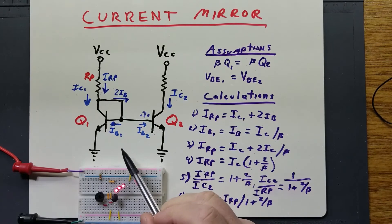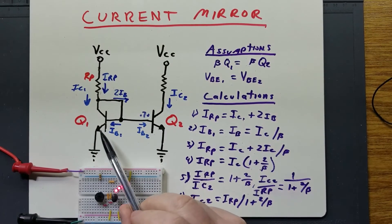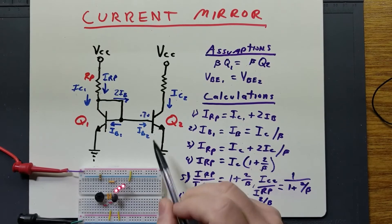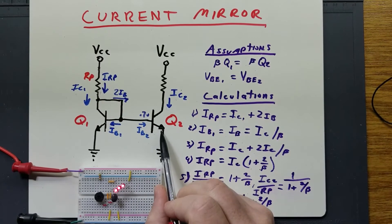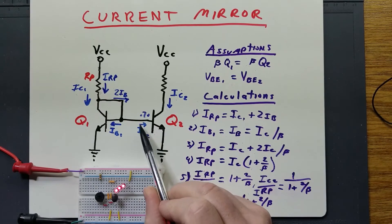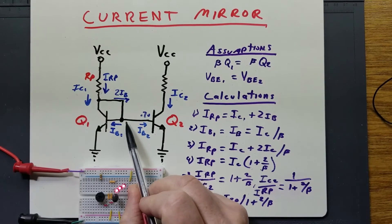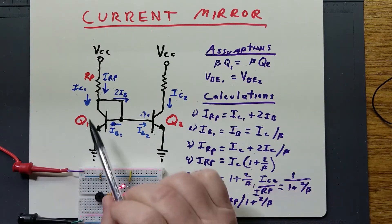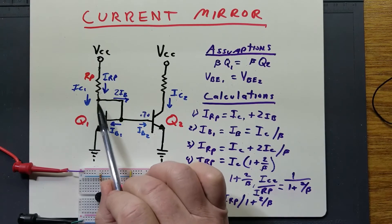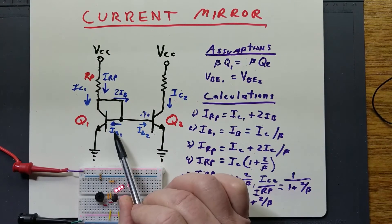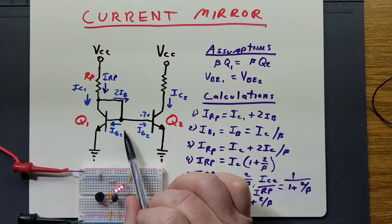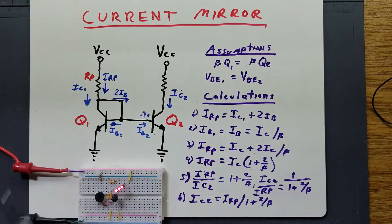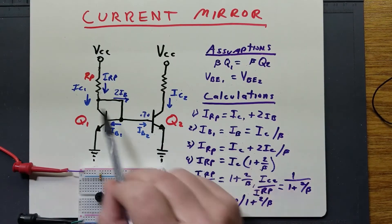This is how the bipolar junction transistor current mirror works. You've got two transistors matched in terms of their gain or beta and their base-to-emitter junction voltage. That's very important because if one transistor had a lower base-to-emitter junction voltage, more current would flow through that junction. You want the base current for both transistors to be the same. So you have IRP, the program resistor current, which splits at this branch: you've got IB1 and IB2 — both should be the same, so you call this 2IB — and IC1. Therefore, IRP equals IC1 plus 2IB.